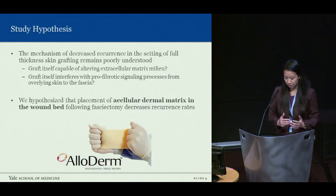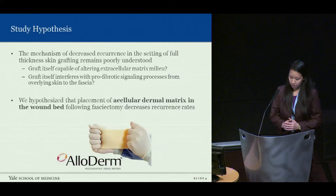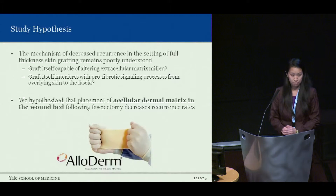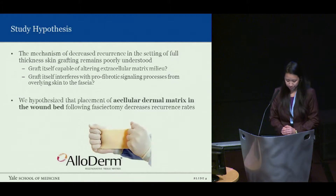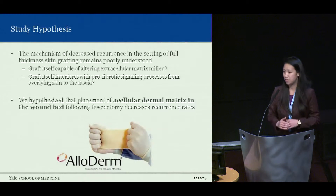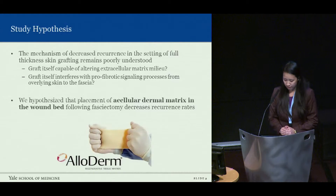The mechanism of decreased recurrence in the setting of full-thickness skin grafting remains poorly understood. It has been postulated that perhaps the graft itself is capable of bringing in a novel extracellular matrix milieu that somehow decreases pro-fibrotic tendencies, or perhaps that the graft itself interferes with pro-fibrotic signaling processes arising from the overlying skin down to the susceptible fascia.